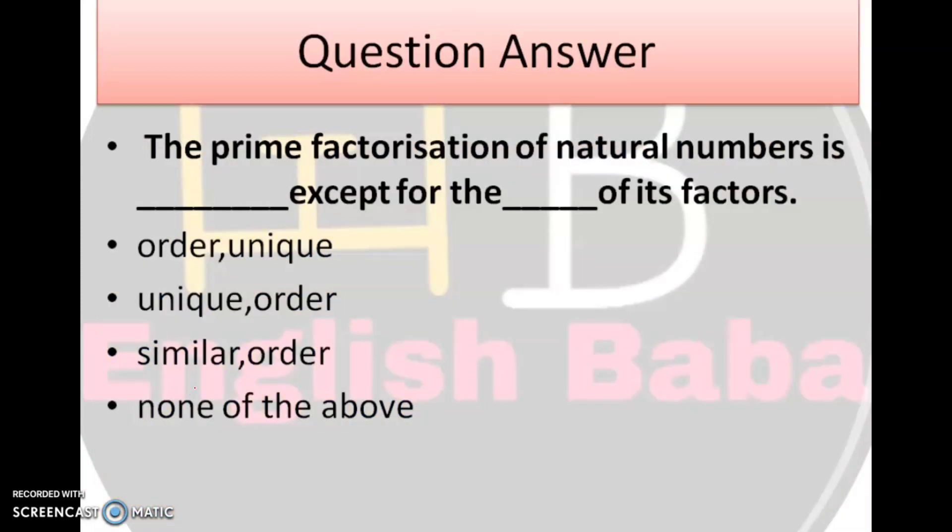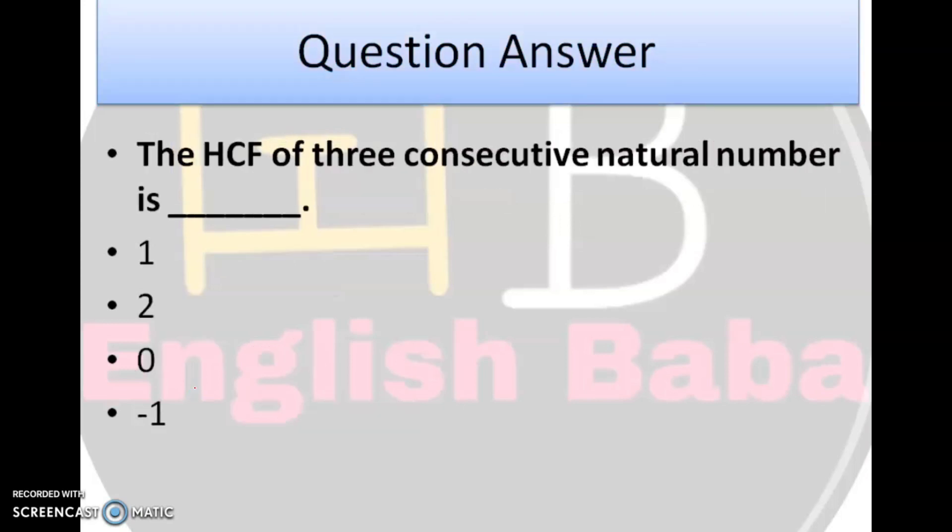Question number 2. The prime factorization of natural numbers is dash except for the dash of its factors. Order unique, unique order, similar order, none of the above. The right answer is unique order. Do no questions, humare fundamental theorem of mathematics be based on.